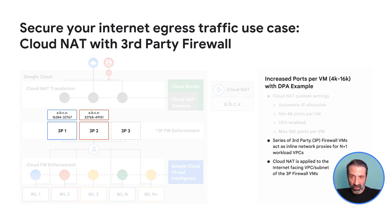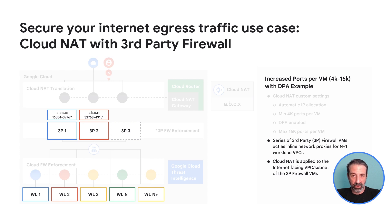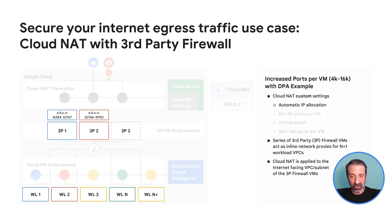The workload VMs will not have any Cloud NAT configured for their subnets. One of the first things to consider is increasing the number of ports per VM, since each third-party firewall will be proxying connections on behalf of multiple virtual machines. You can also consider enabling Dynamic Port Allocation (DPA), which can dynamically add or remove ports for a VM as needed. In this case, we have increased the number of ports per VM to start at 4,000, with the potential to go to 16,000 using DPA. Automatic IP allocation can scale along with the instance group and add additional public IPs to the pool as needed.